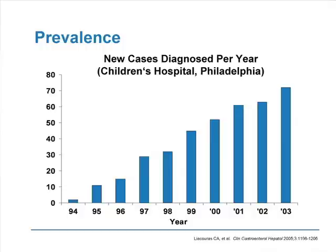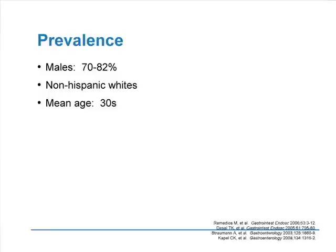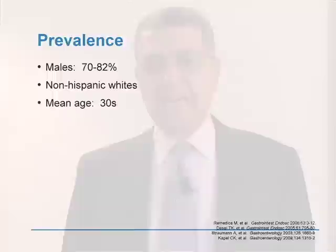Data from the Children's Hospital of Philadelphia up to 2003 shows that in 1994 there were a couple of cases, and year after year the number continued to increase — and has continued to increase since then. The disease is mostly prevalent in males, with about 70% to 80% of cases occurring in males, mainly in non-Hispanic whites. It is much rarer in blacks and other ethnic groups. The mean age is about 30, so your typical case is a young male, though the disease can occur in any age group.